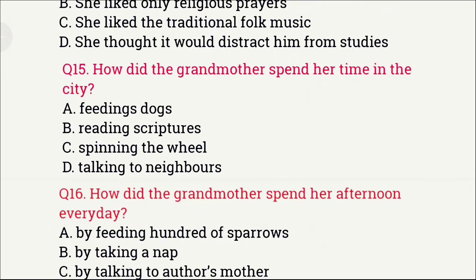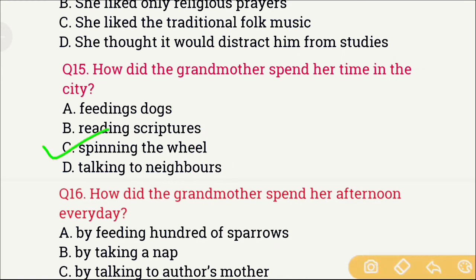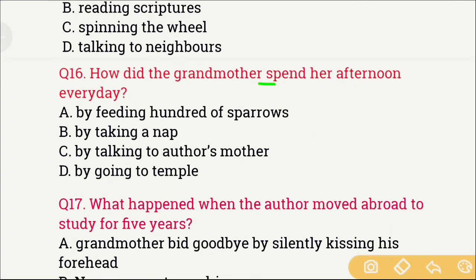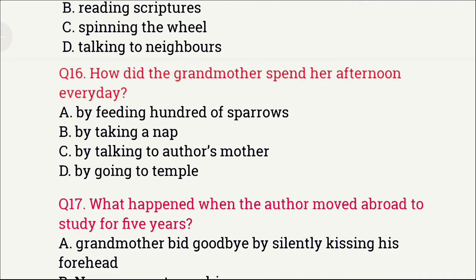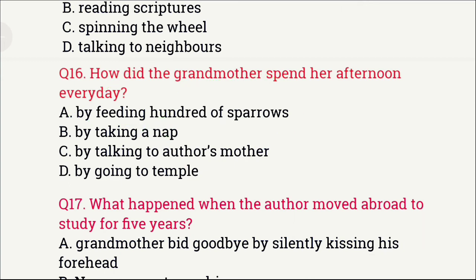Question number 15: How did the grandmother spend her time in the city? Specifically, how did grandmother spend her afternoon every day? The options are: A) By feeding hundreds of sparrows, B) By taking a nap, C) By talking to the author's mother, and D) By going to the temple. The right answer is option A — by feeding hundreds of sparrows. The grandmother would feed about a hundred sparrows in the afternoon.